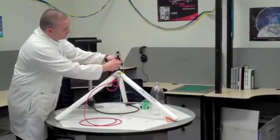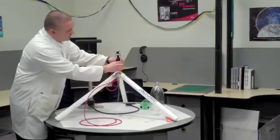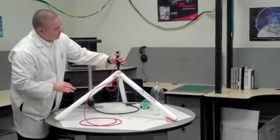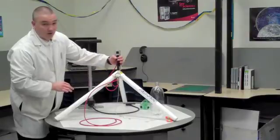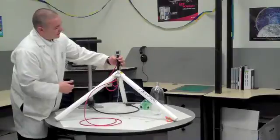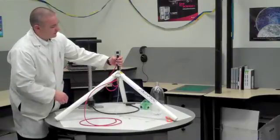And then this little collar that can slide up and down, this is our restraining bar. And the restraining bar is a safety device. Once I have my water bottle rocket on the Aquaport launch pad, I'm going to slide that restraining bar up and that's going to keep it from going anywhere.